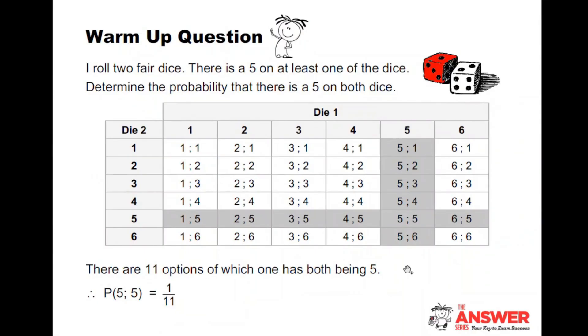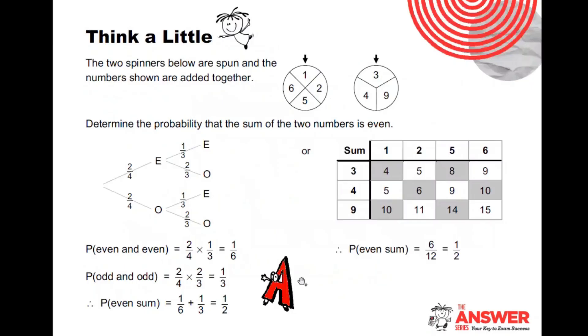If we look at the warm-up questions, for those who didn't join at quarter to four, this was the first question. I rolled two fair dice. There's a five on at least one of the dice. Determine the probability that there's a five on both dice. Now this is different to the question we had before where I had all 36. This one I've said to you there is a five on at least one of the dice, which means my sample space is only the highlights. So the total number of outcomes that has at least a five is 11. How many of those is there five on both dice? Just one of them. So the probability for that one is one over 11.